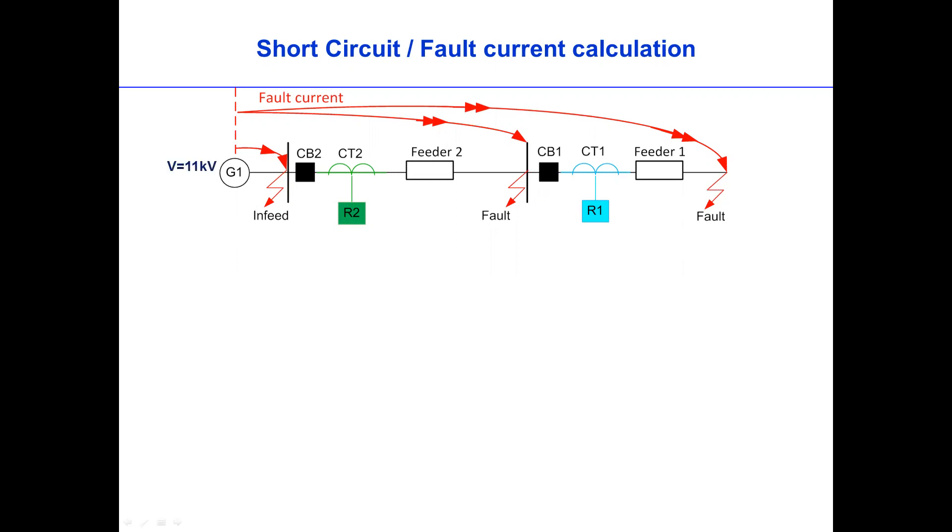The first thing we need to do is calculate the source impedance of the generator, how strong the generator will be, and the line impedance of feeder two and feeder one. If we have the line impedances and the source impedance, then we should be able to calculate the fault at each fault location.